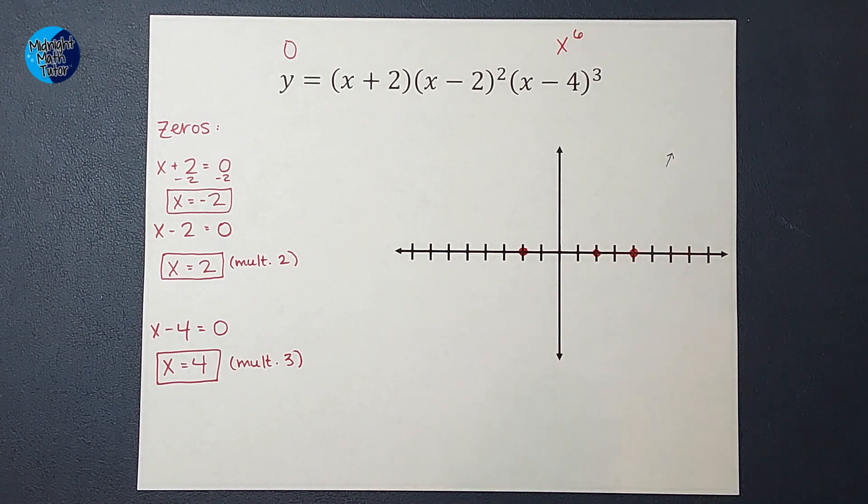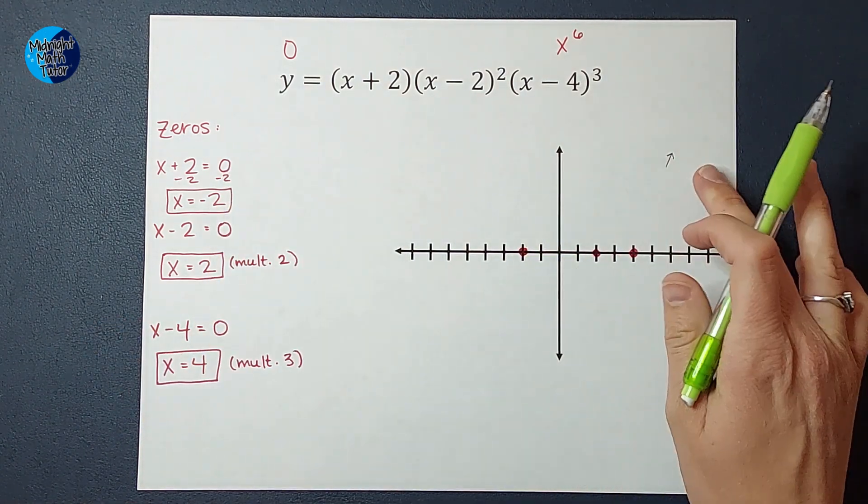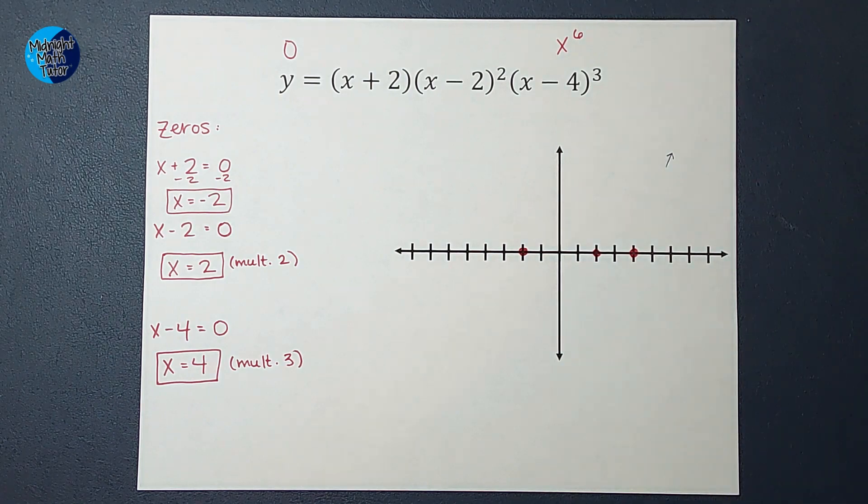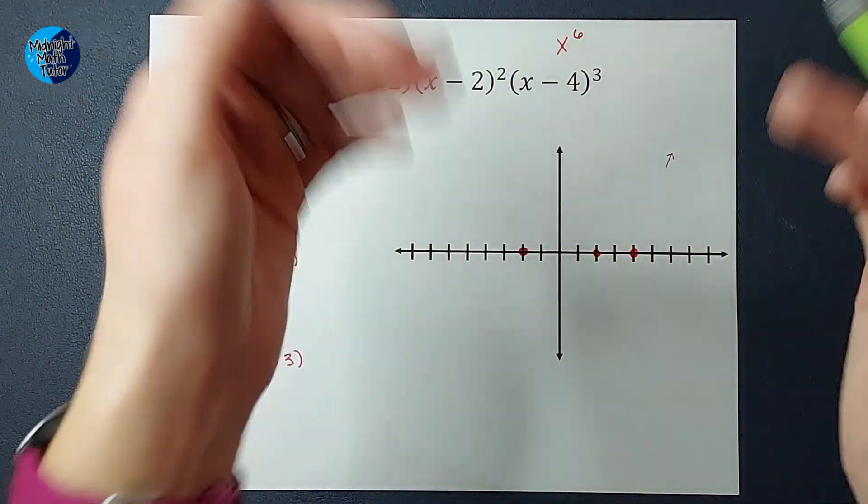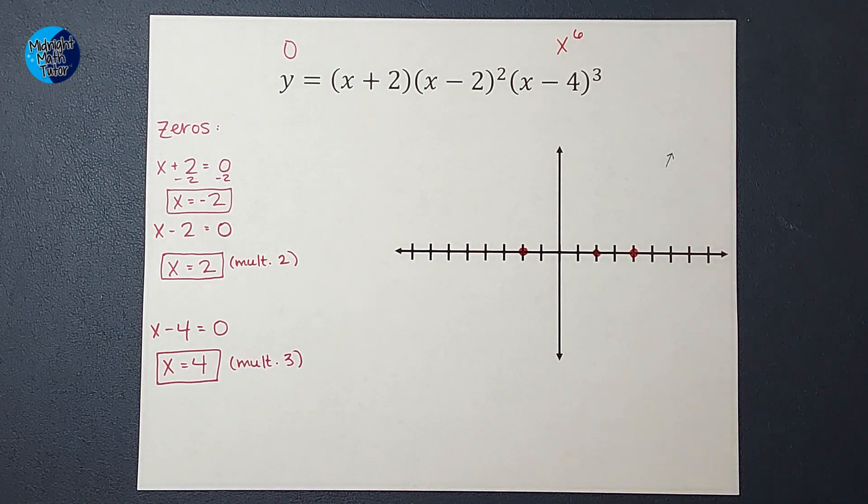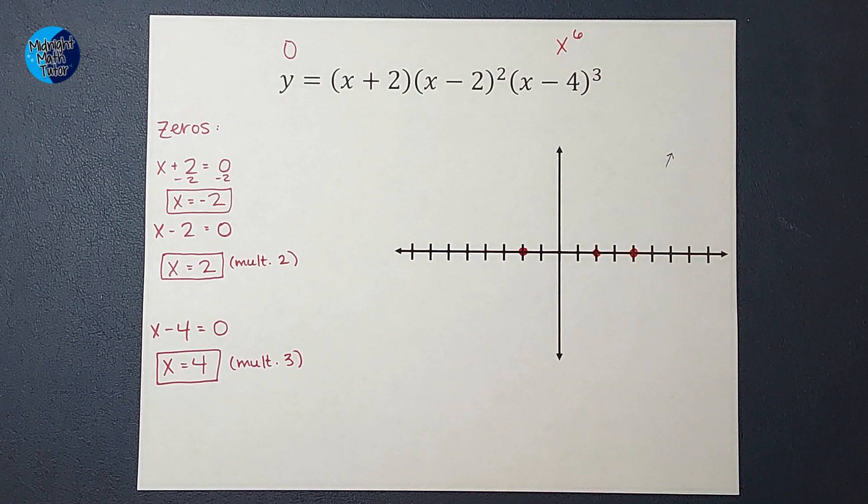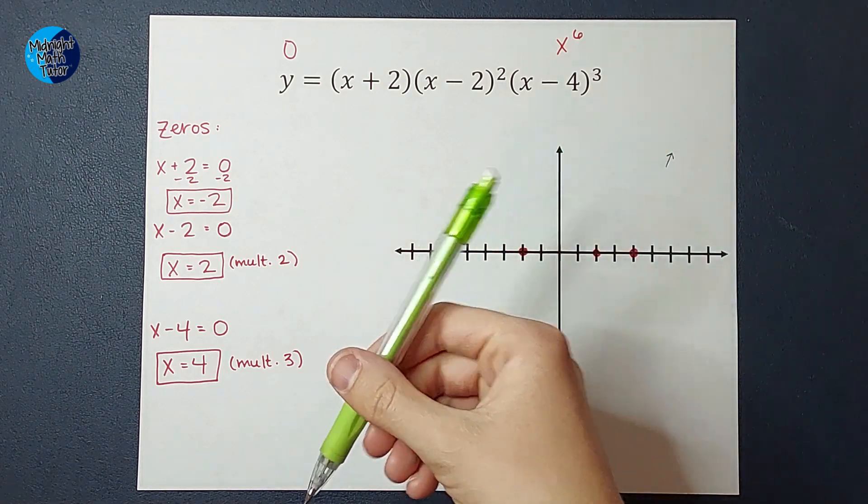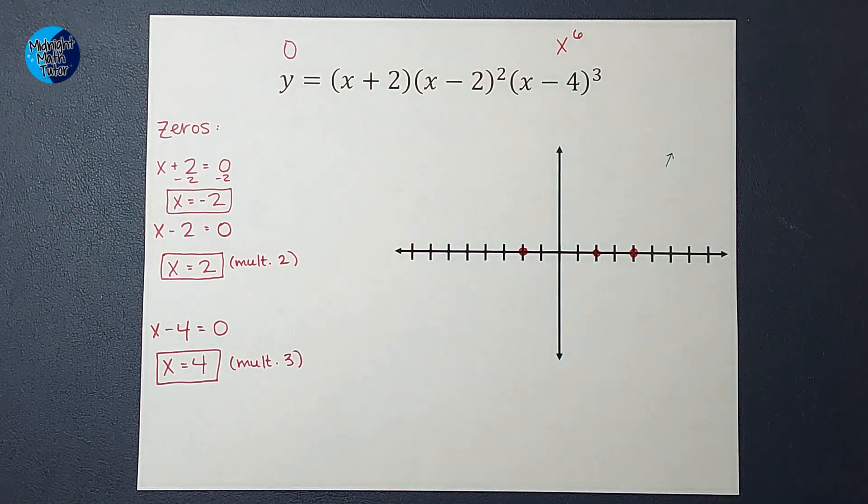If it's even, my left side of the graph is going to end the same way as the right side. If this side's up, it's going to end up. If this side's down, it would end down. Now, if it's an odd degree, like 1, 3, 5, then the left side will do the opposite of the right side.